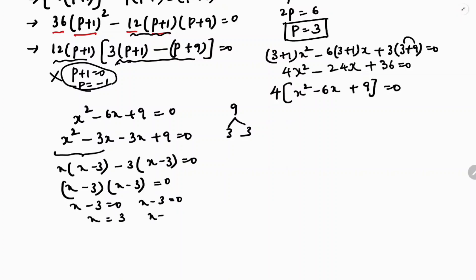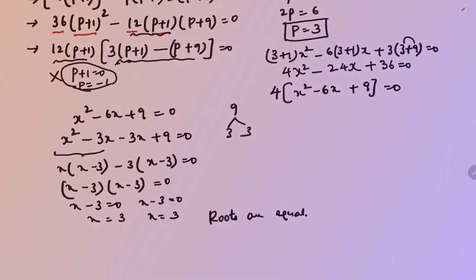Therefore x = 3 and x = 3. As observed, the roots are equal — both roots are x = 3, confirming the condition given in the question.